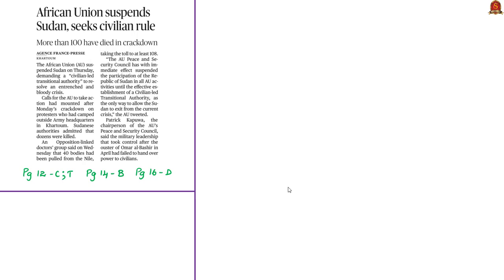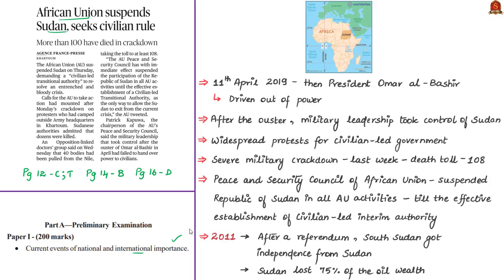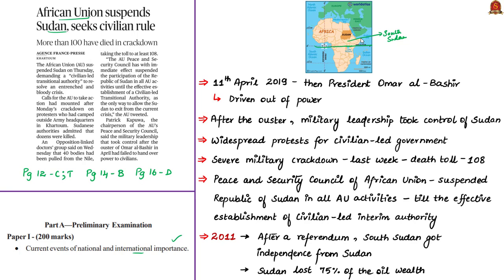The final news article is about the suspension of the Republic of Sudan by the African Union, relevant in the prelim syllabus under current events of international importance. The Republic of Sudan is a country in the African continent — note that the equator does not pass through Sudan. To the south of Sudan is South Sudan, also known as the Republic of South Sudan — the equator does not pass through South Sudan either. Since December 2018, there were severe protests against the then-president Mr. Omar al-Bashir, demanding better governance and ultimately his resignation. The military drove him out of power on 11th April 2019. He had been in power since 1989.